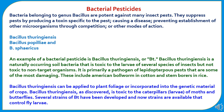Bacillus thuringiensis is a naturally occurring soil bacterium that is toxic to the larvae of several species of insects, but not toxic to non-target organisms. It is primarily a pathogen of lepidopteran pests, which are some of the most damaging, including the American bollworm in cotton crop and the stem borer in rice crop.